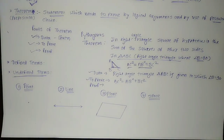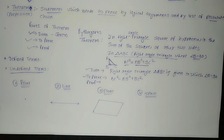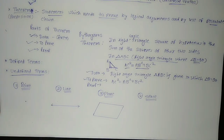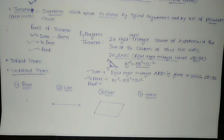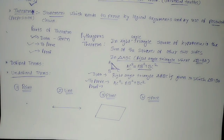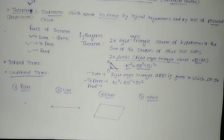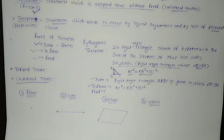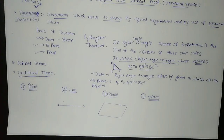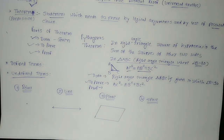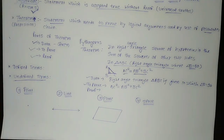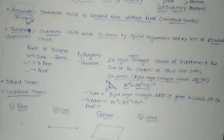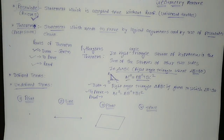Rather than these four terms — point, line, plane, and space — all other terms in geometry are considered defined terms. In part one, we have seen what is postulate or axiom, what is theorem, what are defined terms, and what are undefined terms. In the next part, we will see more about Basic Mathematics Geometry part two. I hope you understood about postulate, theorem, undefined terms, and defined terms. If you understood, click the like button and share with your friends. See you in part two. Thank you so much.